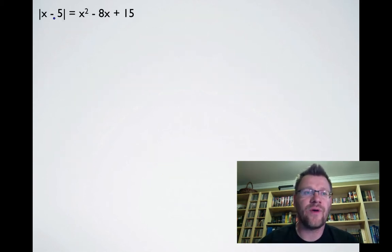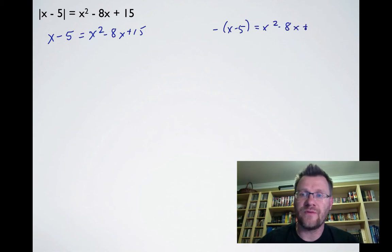Next example: |x - 5| = x² - 8x + 15. We write two equations: one where x - 5 = x² - 8x + 15, and another where -(x - 5) = x² - 8x + 15.